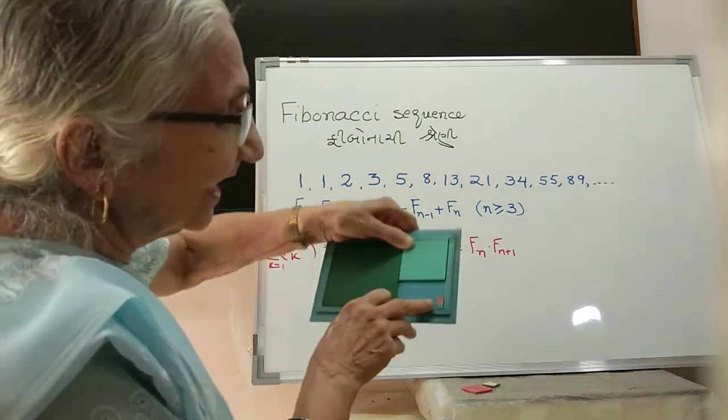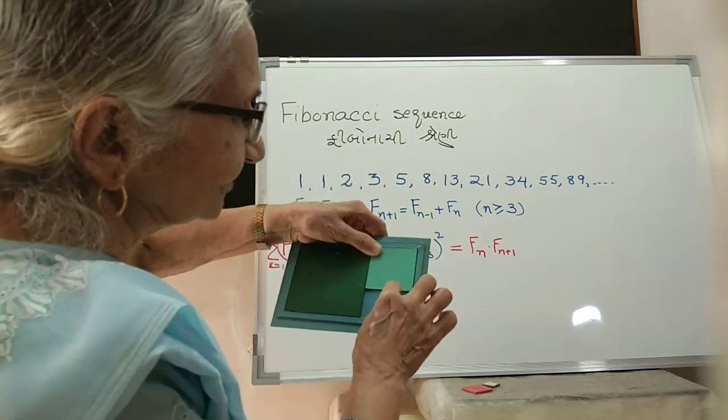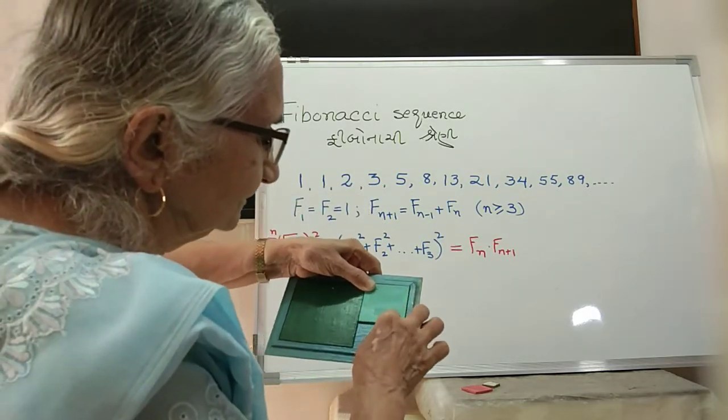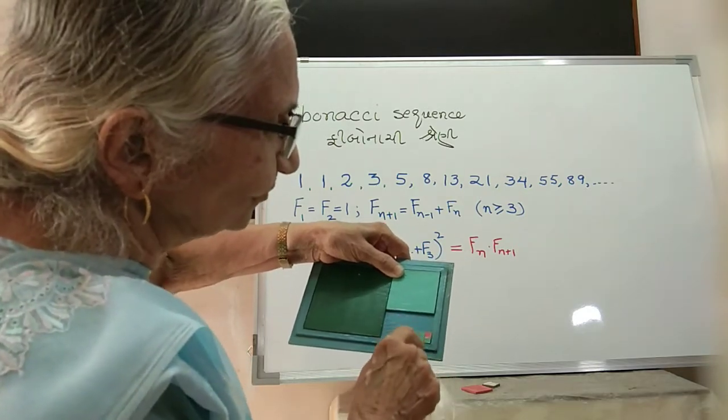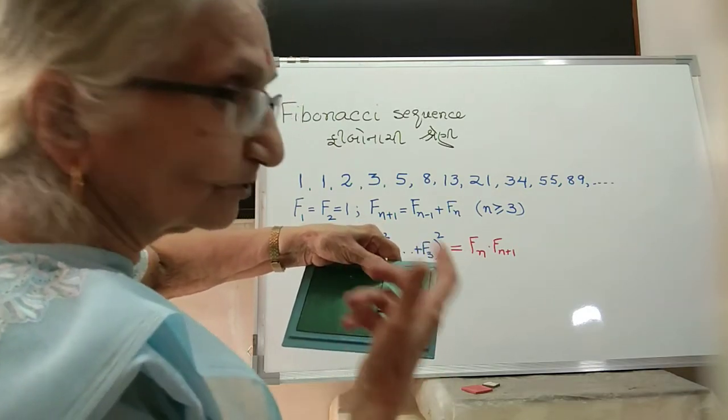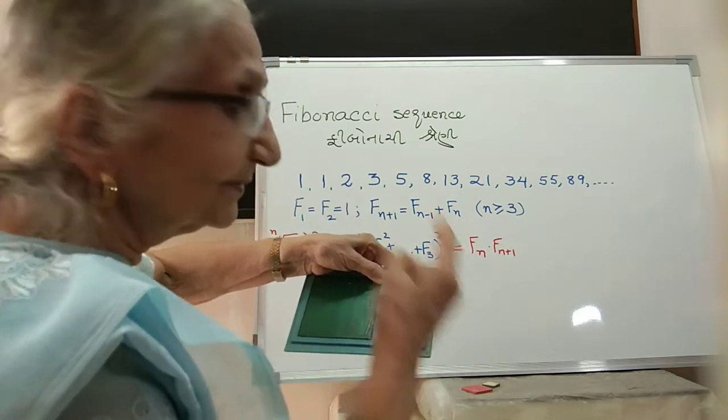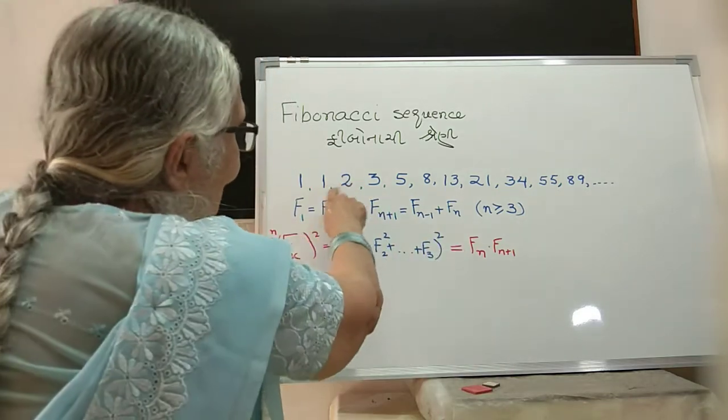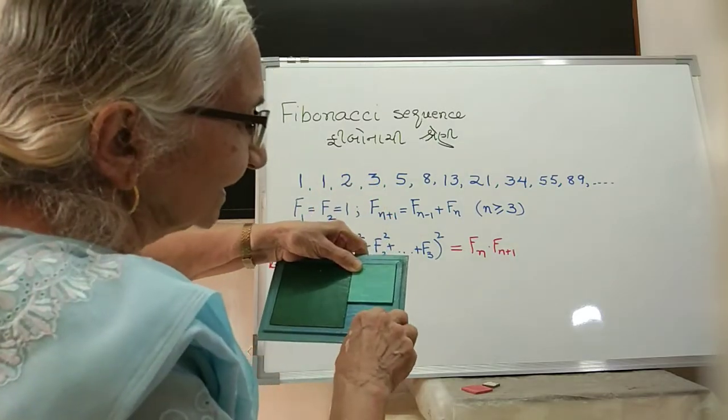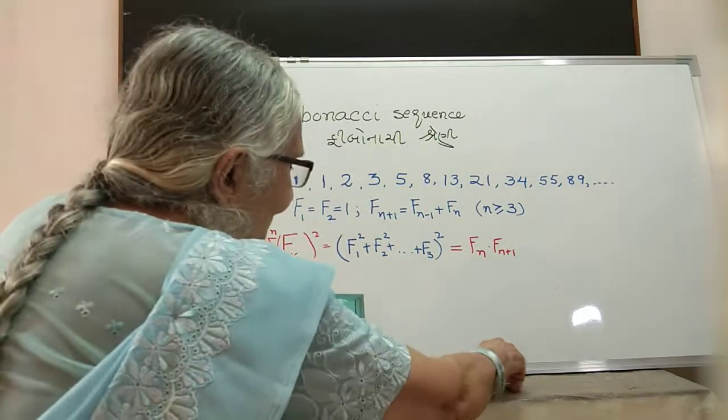Now the next one should be 2². Now 2 is easy—you know it is 1 + 1. We have here 1 and 1, so it has to go here. 1 + 1 is 2, so this length is 2. This is 2².